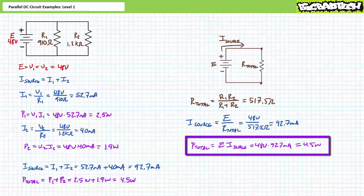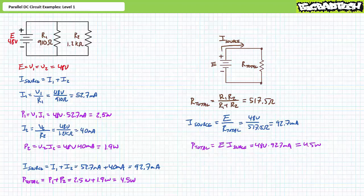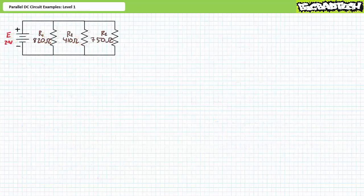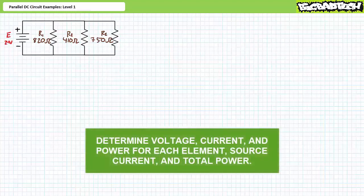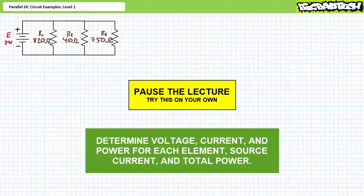I've got a reasonable degree of confidence our answers are correct, and we can move on to the next illustrated example. This example features a 24-volt source in parallel with R1 (820 ohms), R2 (410 ohms), and R3 (750 ohms). We're again asked to solve for the voltage drop, current, and power for each element, the source current, and the total power. Pause the lecture and try this on your own.